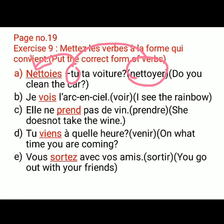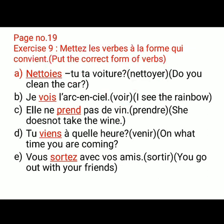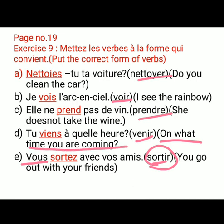I have already done this exercise, so do this exercise in your book. Natoye means clean. Voar means see. Praundra means take. Veneer means come. Sortir means out. You have to change these words according to the subjects. I have given the meaning of each line as well.